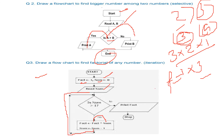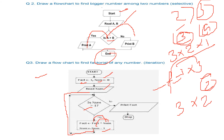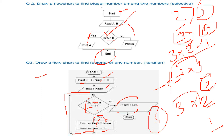Continuing the factorial loop: num was 3, now it becomes 2. fact = 1 × 3 = 3, and now we multiply by 2, making fact = 6. We reduce num to 1 and go back. Since num is now equal to 1 (not greater than 1), we exit the loop and print fact, which is 3 × 2 = 6. That is the factorial, and then we stop.